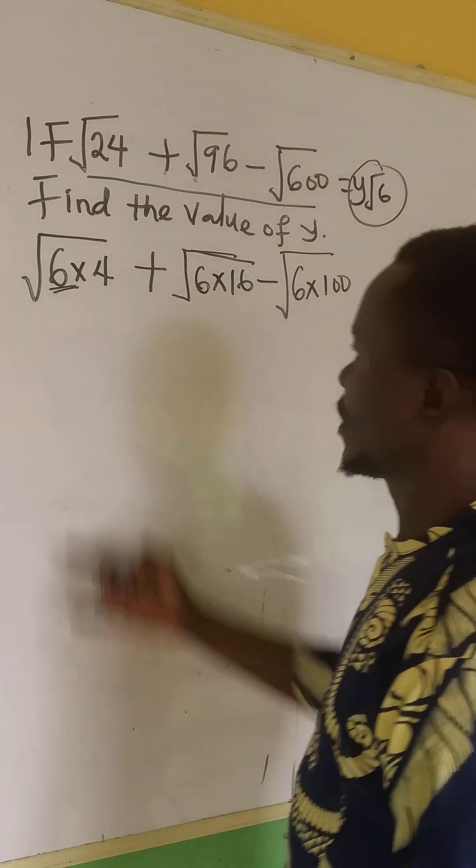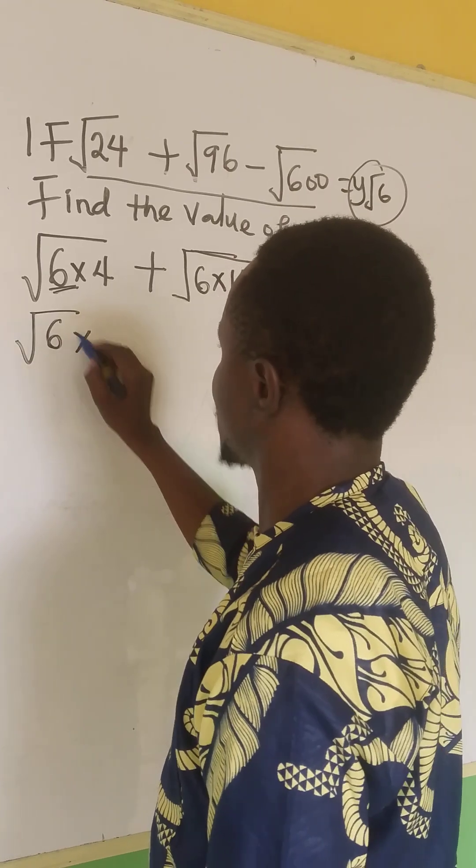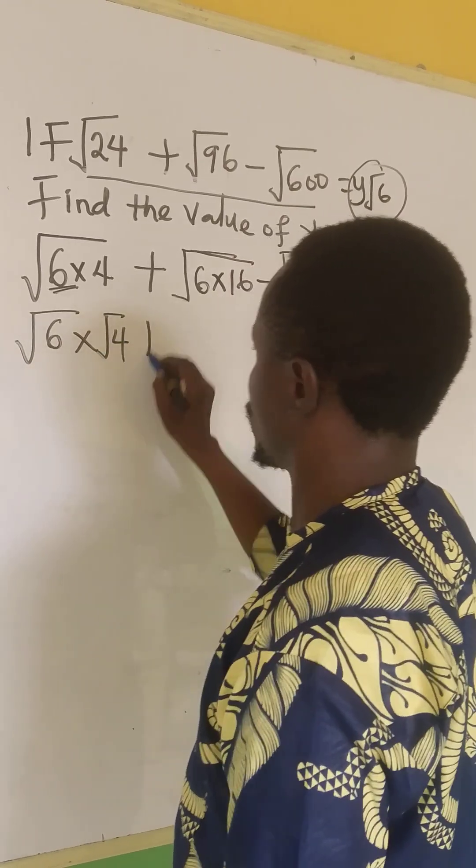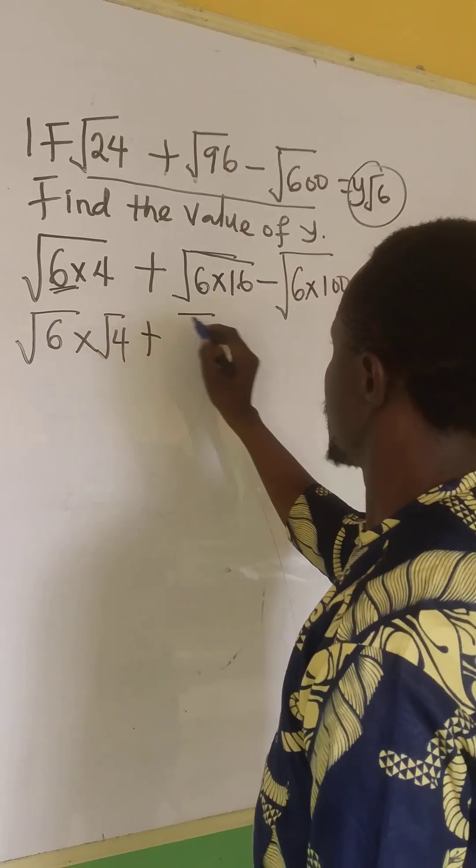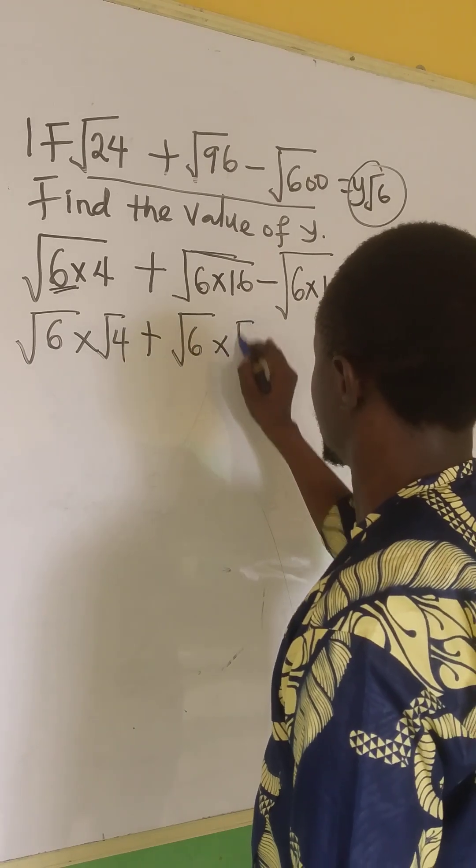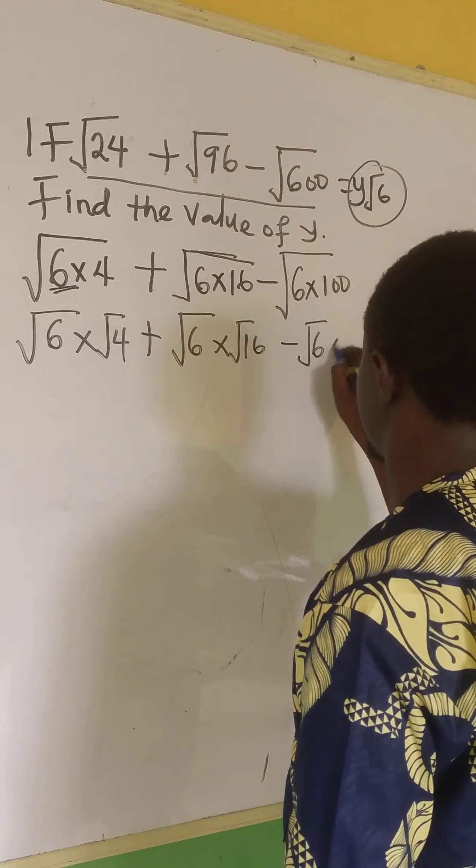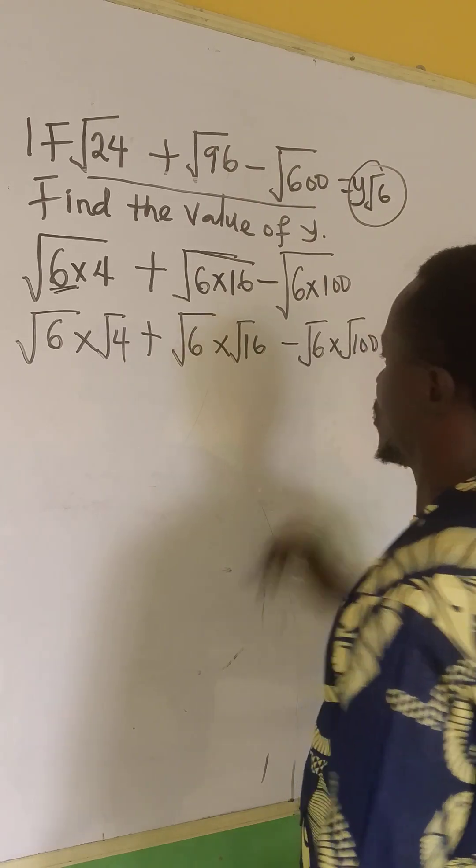Of course, now I can separate them to be √6 times √4 based on the law of multiplication. And we have √6 times √16 minus √6 times √100.